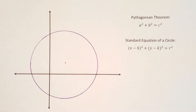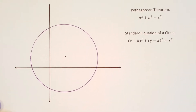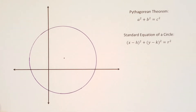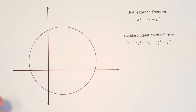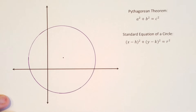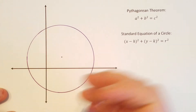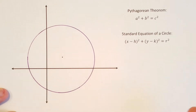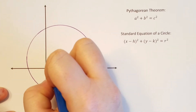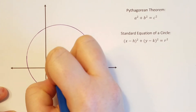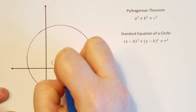So we have our circle here — just a circle drawn somewhere on the coordinate plane. I'm going to label the center of this circle because I don't know where it is; there are no numbers here.